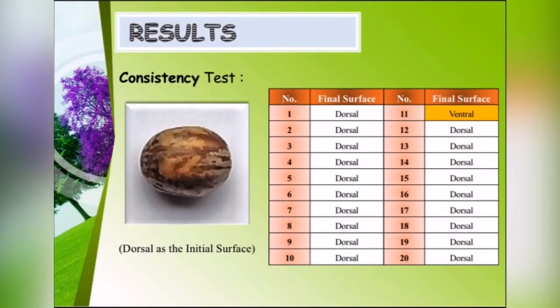For our results, in our consistency test, we used 20 seeds which we planted initially with the dorsal surface. Out of the 20 samples, only one rubber seed ended with the ventral surface on top.